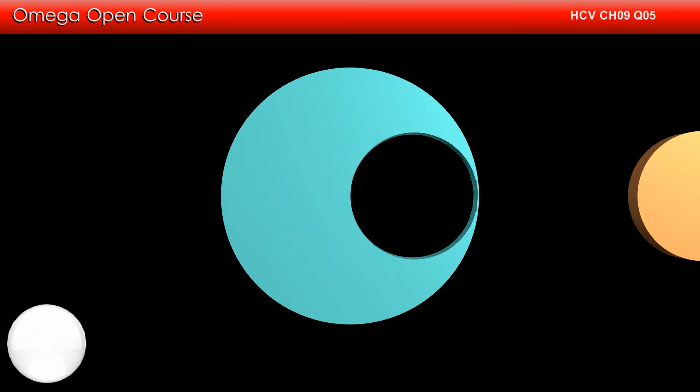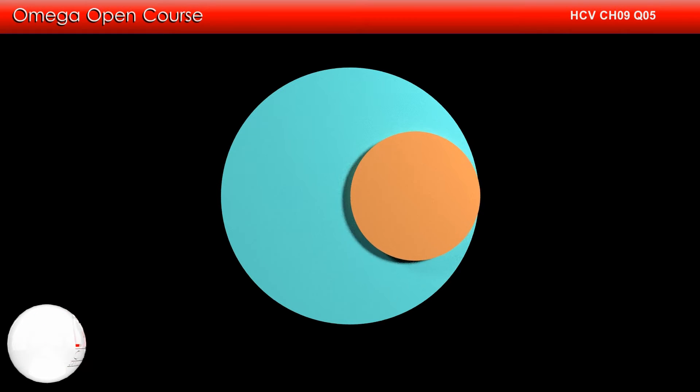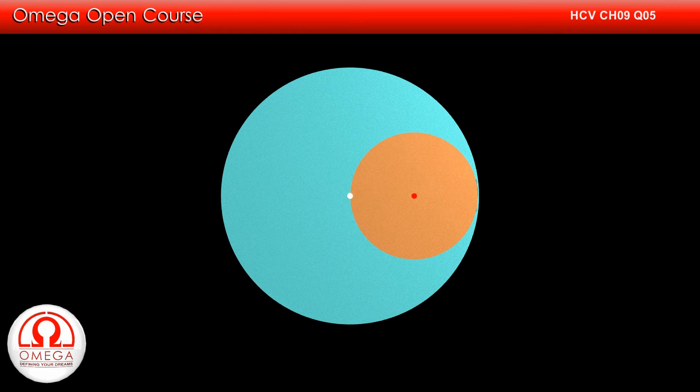Let us bring back the portion that was cut from the disk and put it back to its place. We now have a disk of radius 2R. The center of mass of this disk is at its center. The center of mass of the smaller disk is at its center.